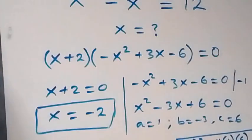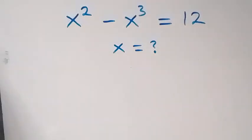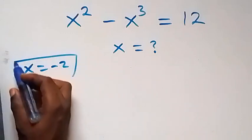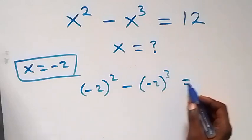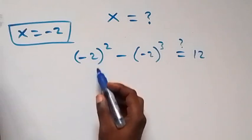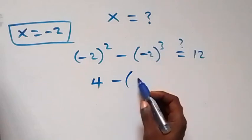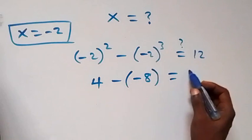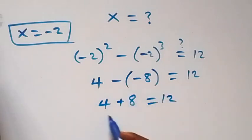When we check with x equals minus 2, substituting into the original equation: (minus 2) squared minus (minus 2) cubed equals 12. Minus 2 squared is plus 4, and minus (minus 8) is plus 8, so we have 4 plus 8 equals 12, which is indeed 12. The left-hand side equals the right-hand side.